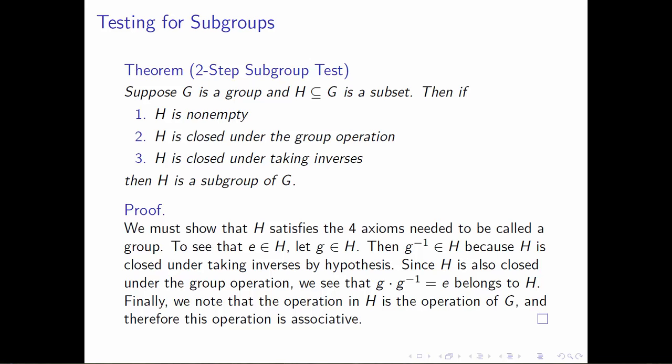Now our subset is closed, closed under taking inverses, and contains the identity. The last thing needed to show H is a group is that the group operation is associative. However, this is quite easy: the group operation in H must be the operation of G — that was baked into our definition of subgroup. Since G is a group, its operation is associative on all elements of G, and in particular it's associative on the elements of H. That finishes checking the four group axioms, completing the proof of the two-step subgroup test.